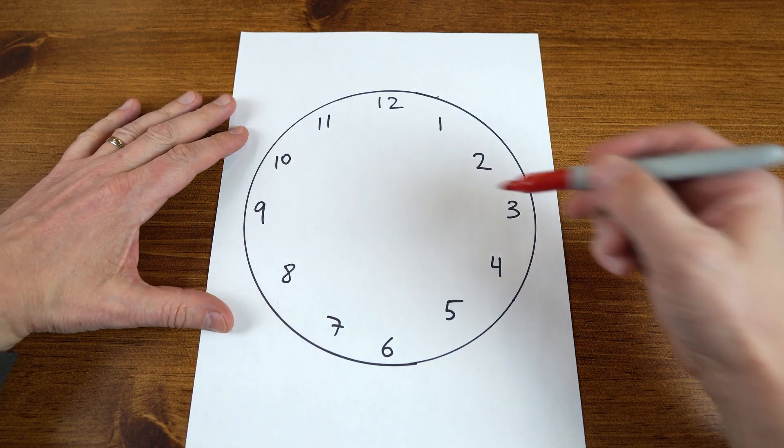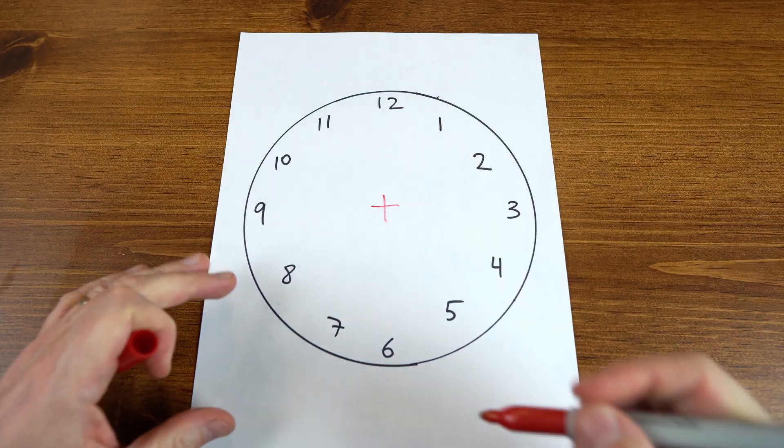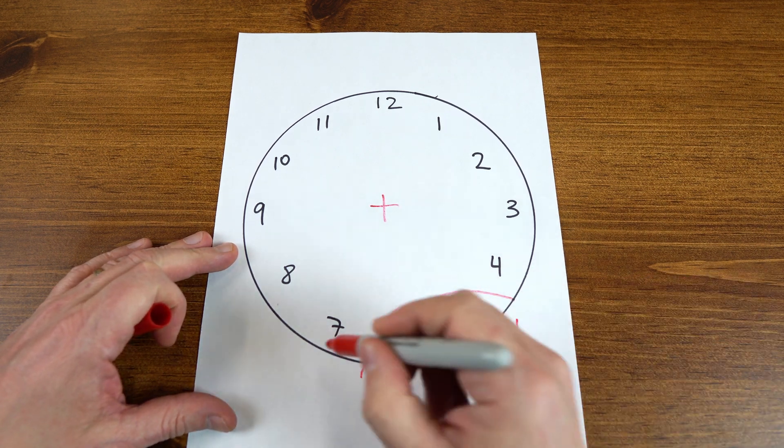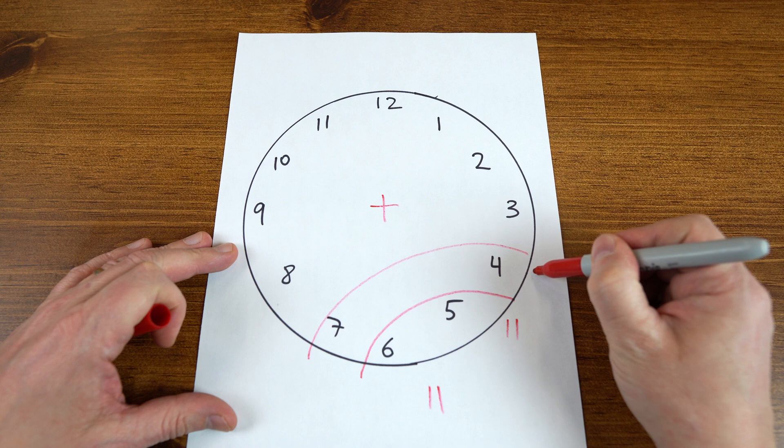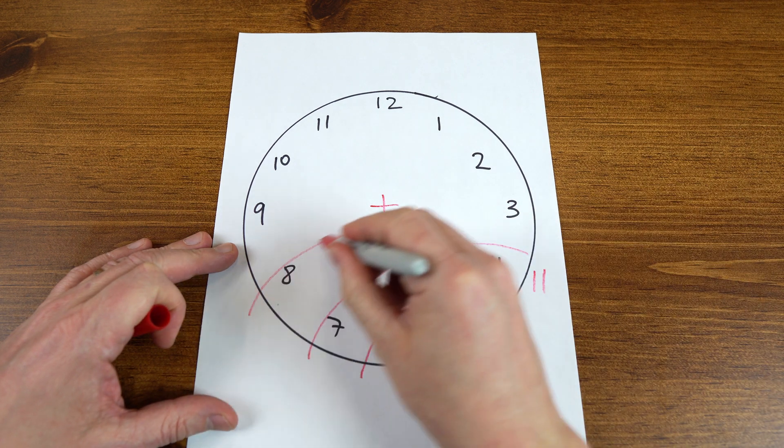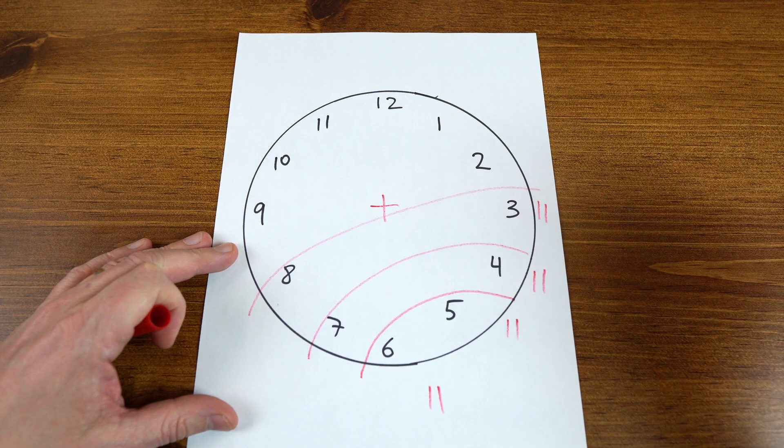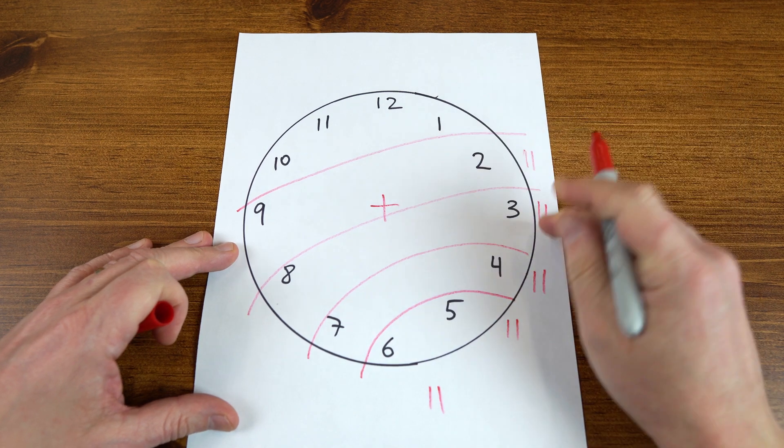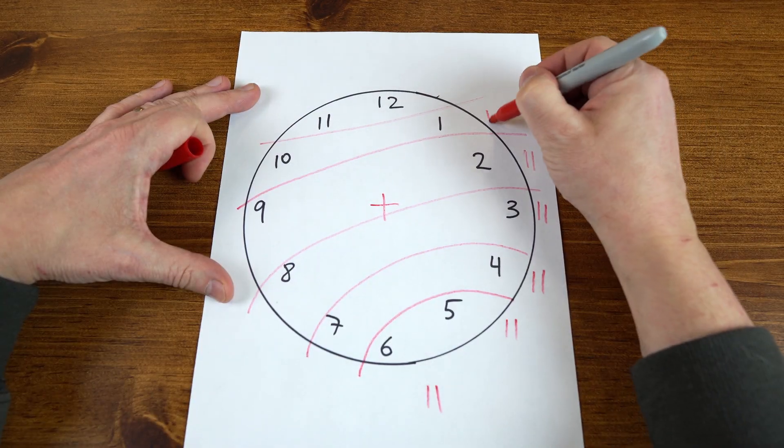This last one I'm going to do addition as well and we're going to make number 11. 6 plus 5, it's 11. 7 plus 4, 11. 8 plus 3, 11. 9 plus 2, 11. 10 plus 1, 11.